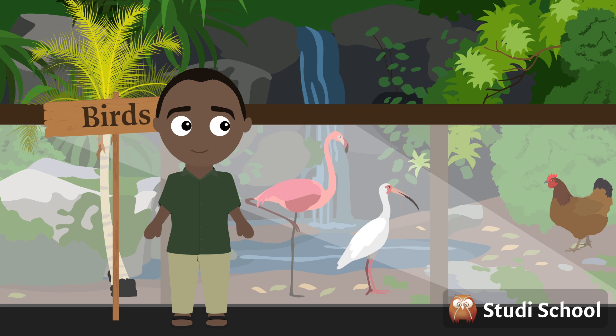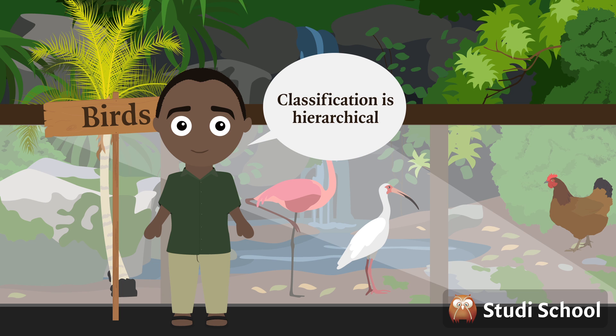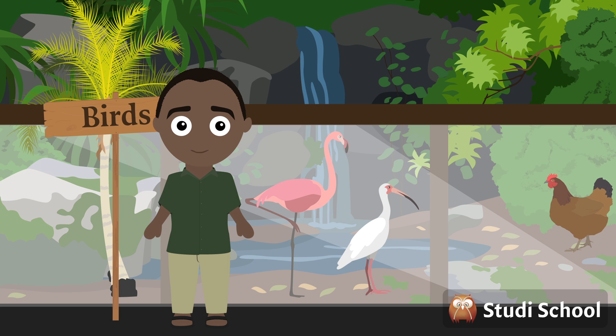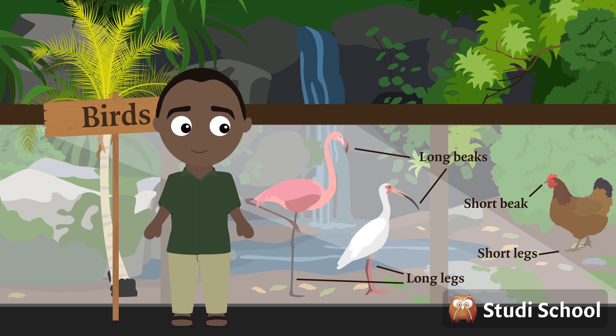Even though they all belong to the bird family, they can be further classified into smaller groups. This means the classification is hierarchical, meaning that larger groups can be divided into smaller groups. We classify organisms based on their similarities and differences.